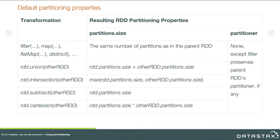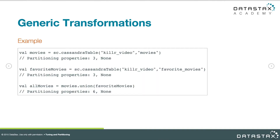When creating a union of one RDD with another, the result will have a number of partitions equal to the partition counts of both input RDDs added together. For intersection, the resulting RDD has partitions equal to the greater of the two source RDD partition counts. For set subtraction, the result has partitions equal to the source RDD's partition count, not considering the other RDD. For a Cartesian product, the result has partitions equal to the product of the two input partition counts — and you can see how that could cause trouble.